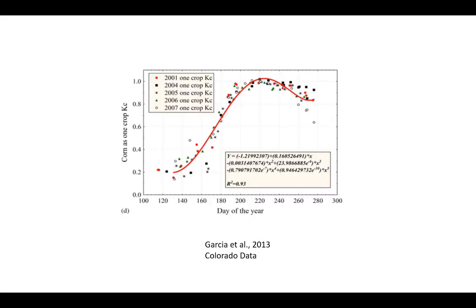Here's a crop coefficient curve from Colorado for corn. Early after planting it's very small, around 0.2, then it increases to one or just above at peak vegetation cover in mid-summer around day 200 to 220. Crop coefficients are very empirical — they usually need to be developed locally for your specific climate and crops. You can't take a KC curve from Colorado and apply it to a field in California; they're usually very location-specific, but they've been a good first approximation of actual crop water use.